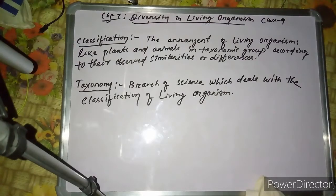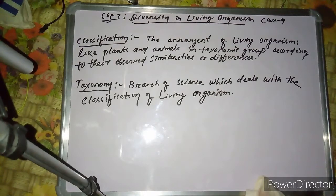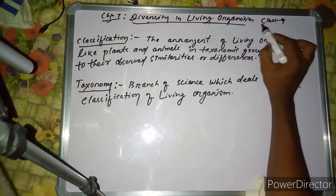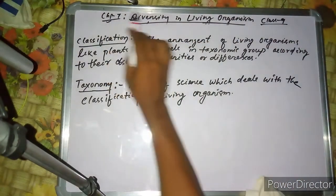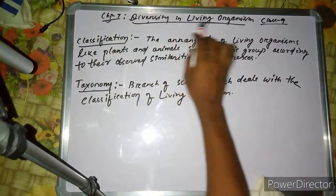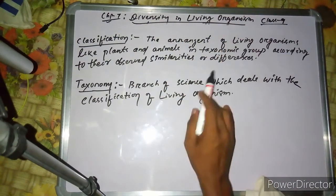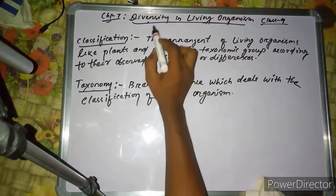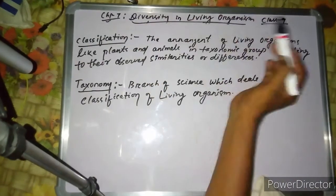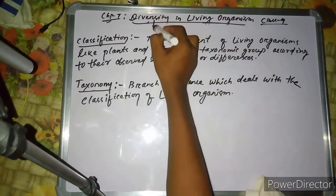I am Dipthikanth Padhyari. Now we are going to study the new chapter of Class 9 — Chapter 7: Diversity in Living Organisms. Diversity means variety.